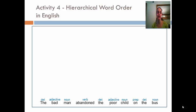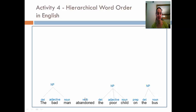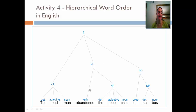Let's go over it. First we look at our noun phrases: 'the bus,' 'the poor child' (noun phrase with adjective), and 'the bad man' (noun phrase with adjective). Then we ask: is 'on the bus' modifying 'the poor child,' or is it modifying where the man abandoned the child? Hopefully you said the latter — it's where the man abandoned the child. So 'on the bus' is a prepositional phrase not connected to the noun phrase. There's a verb in front, making it a verb phrase. So: sentence = noun phrase + verb phrase + prepositional phrase.